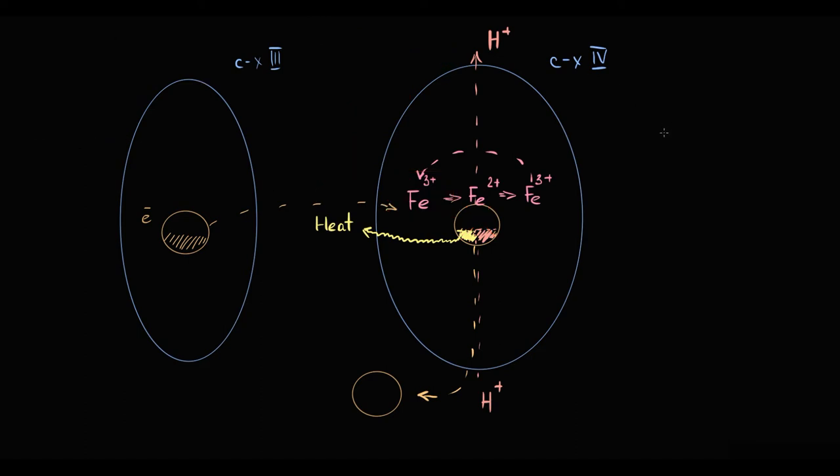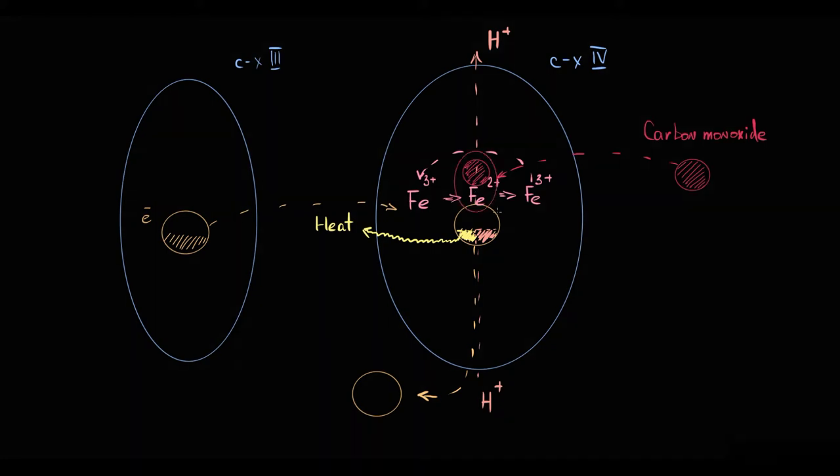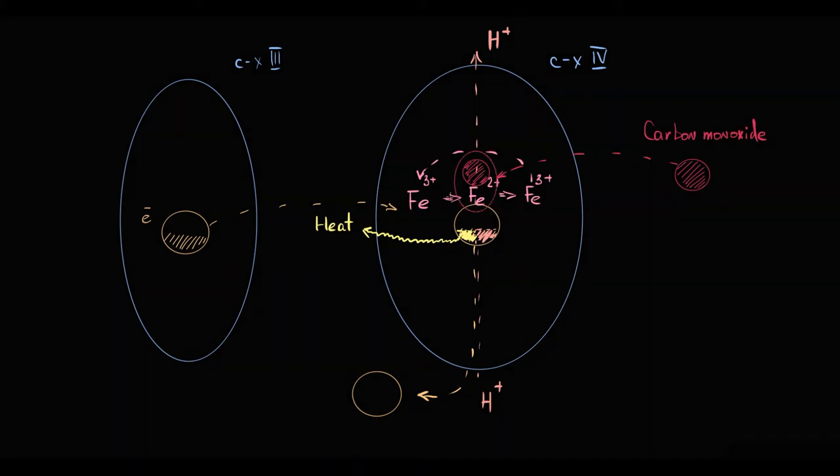Practically the same story for carbon monoxide. But carbon monoxide loves ferrous iron, which is iron in plus-2 state. Once carbon monoxide binds to ferrous iron in complex IV, electron transportation becomes impossible.